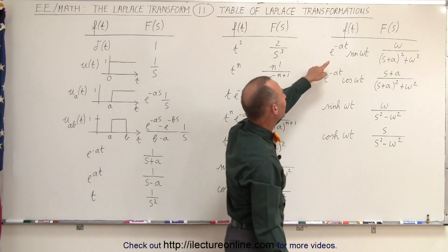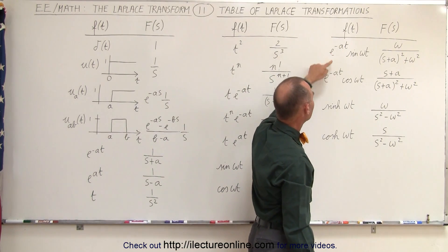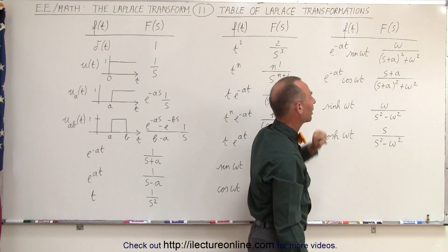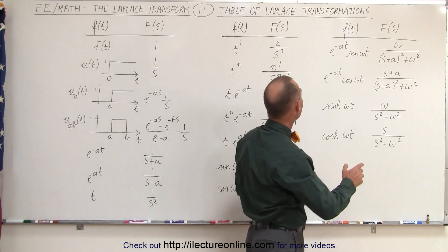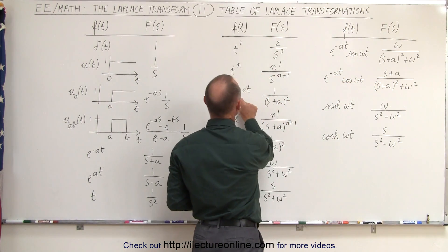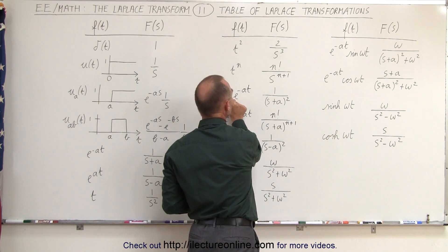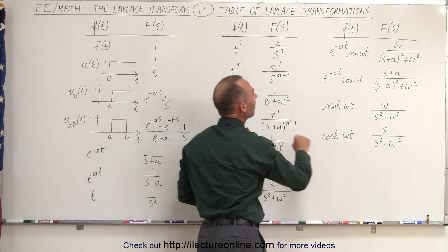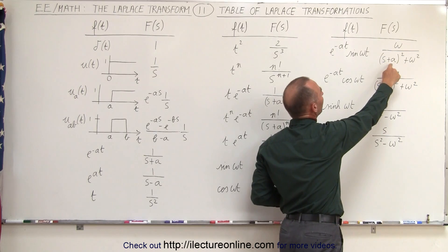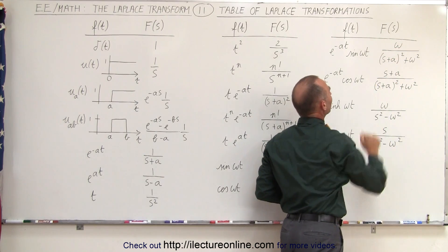Now we have the product of e to the minus at, in both cases, times the sine and the cosine. Notice how that changes. Again, just like before, we have e to the minus at multiplied times the function, we have an s plus a, no different here, s plus a, the ω and ω squared stay the same.